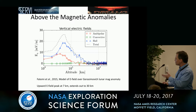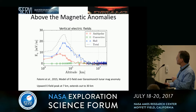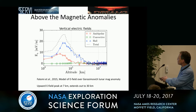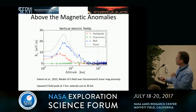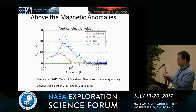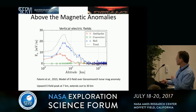This electric field is also seen in another model by Shahab Fatemi modeling the Jurasimovic lunar magnetic anomaly. He also saw the development of these large electric fields that tended to peak up around seven kilometers, but could even be sensed up at 30 kilometers. There's both electric fields formed from ambipolar processes where the plasma itself separates, but also from Hall processes, which are related to separations in the current or in the drift. Combining these two, you have an upward-directed electric field.